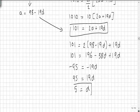Now we have d equal to 5, we can use this equation here, a is equal to 98 minus 19d. So a is equal to 98 minus 19 times 5, giving a value of a equal to 3.